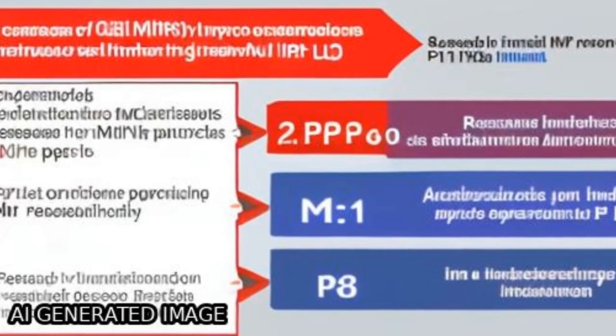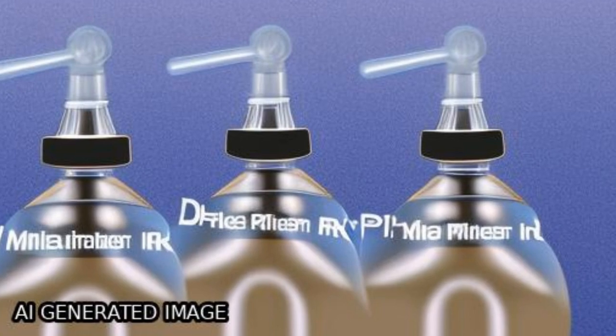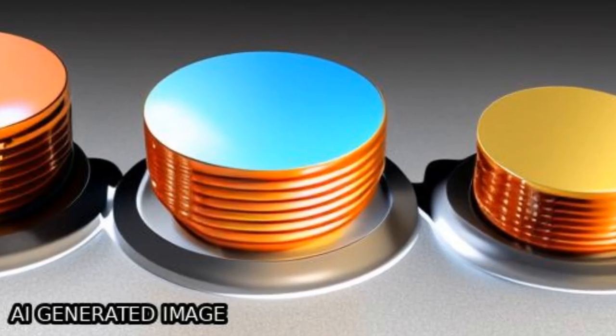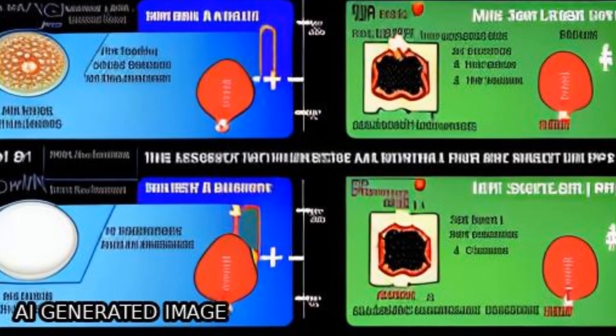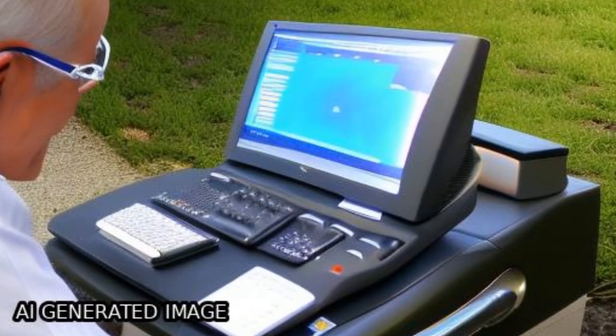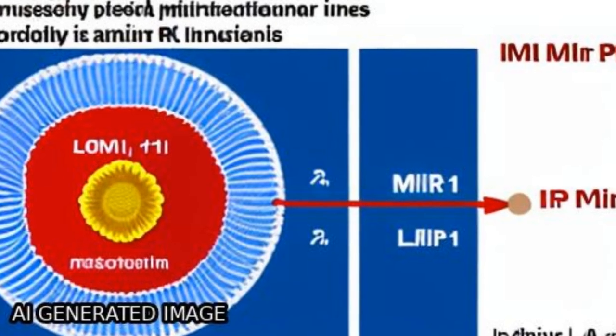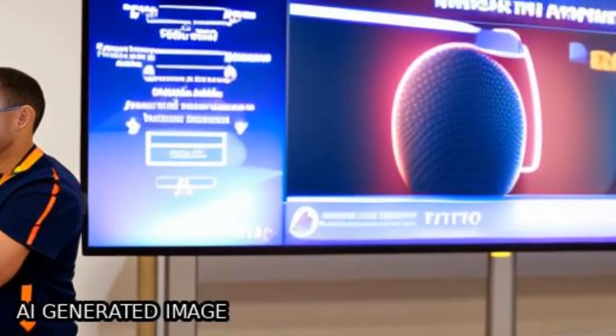Inhibition of STAT-3 expression using S31-201 can deteriorate the improvement of myocardial remodeling, along with the rise of LC3-2 LC3-I and Beclin-1 expression, the reduction of P62 expression, and the reversion of MI attenuation.